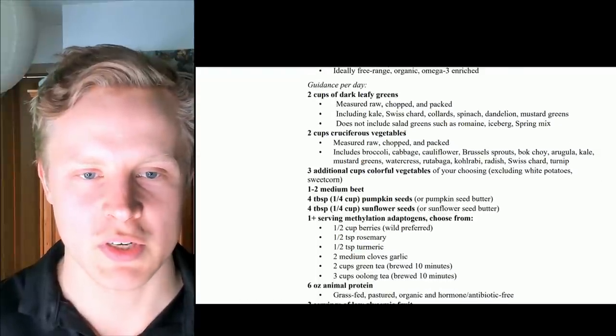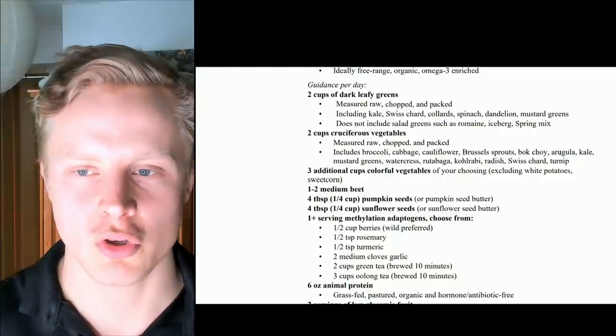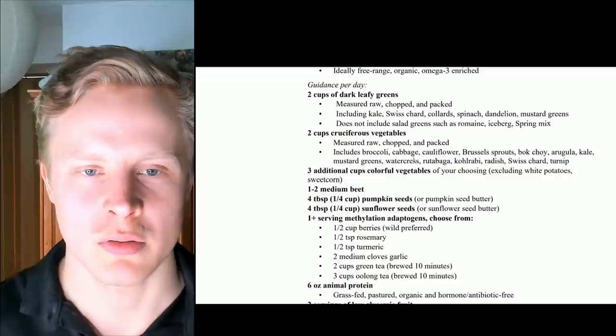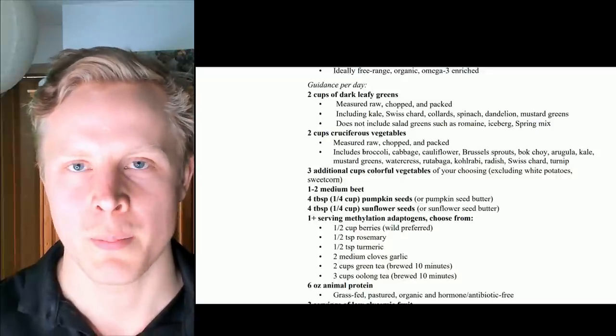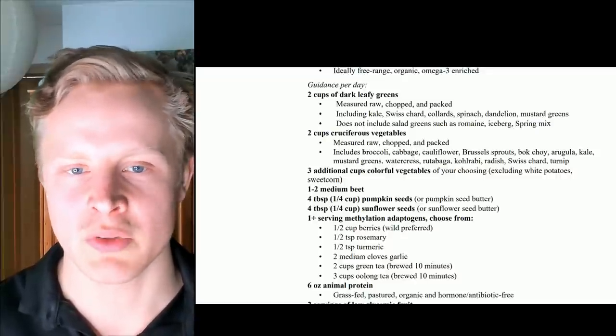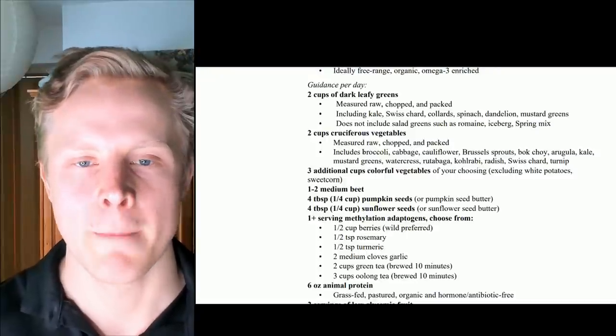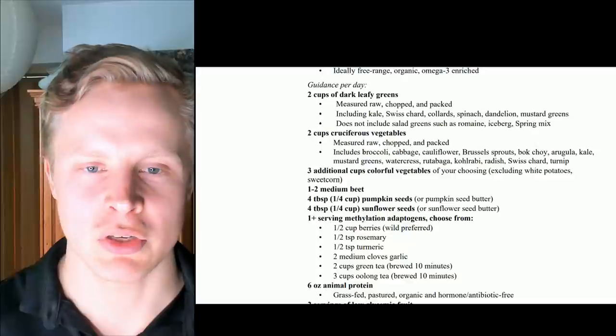Two cups of cruciferous vegetables, broccoli, cabbage, cauliflower, Brussels sprouts, bok choy, mustard greens, watercress, and radish, Swiss chard as well. So these are also quite impactful in turning on many of these longevity pathways in the body through sulforaphane that leads to glutathione and other antioxidant defense systems.